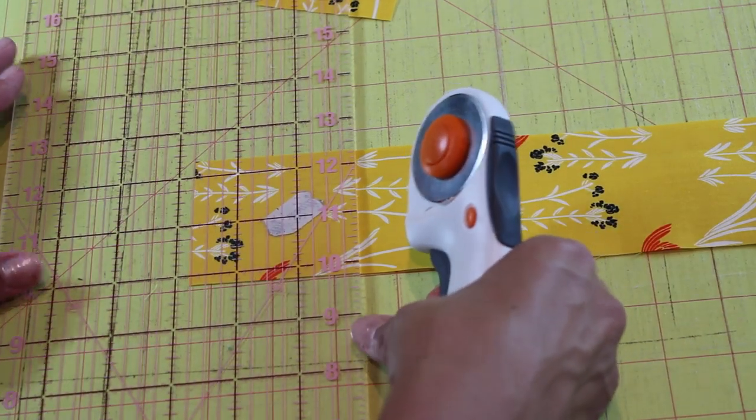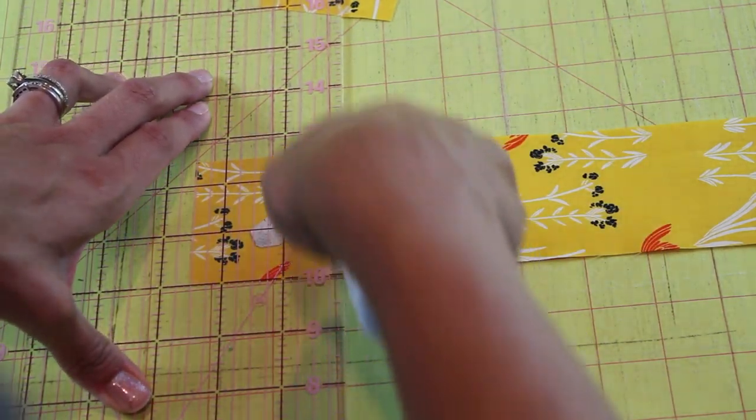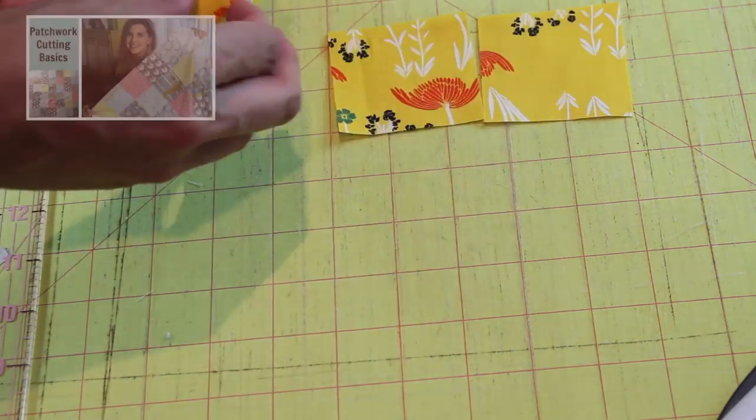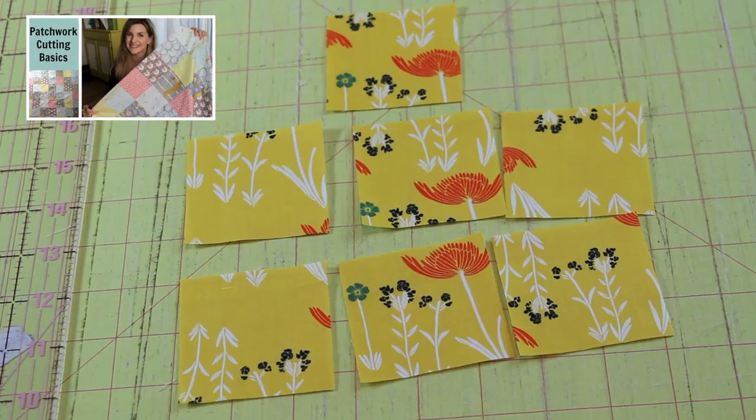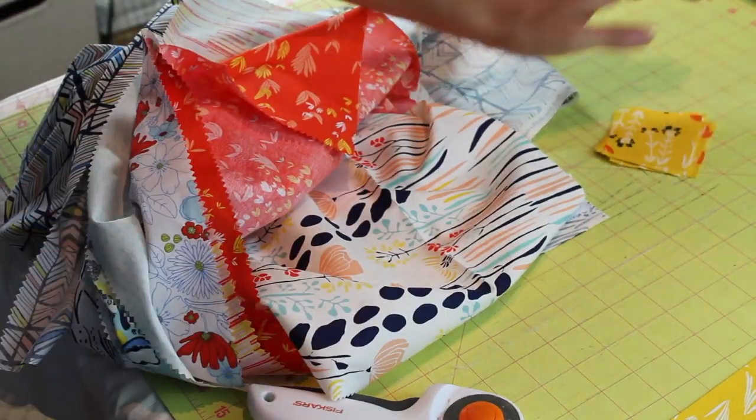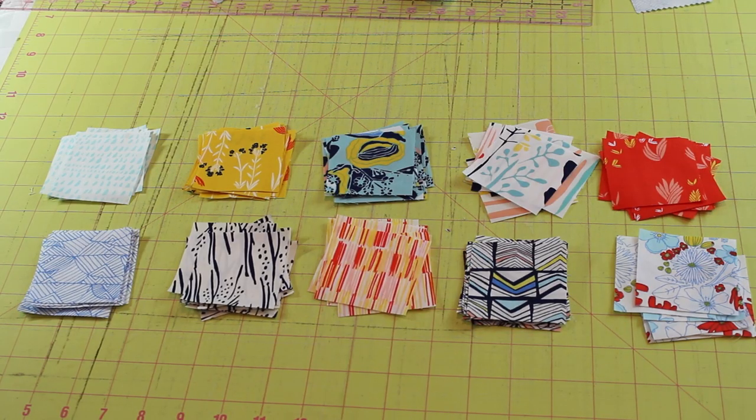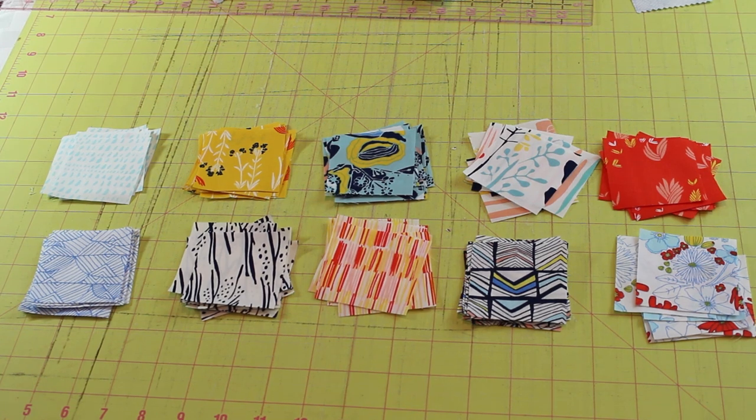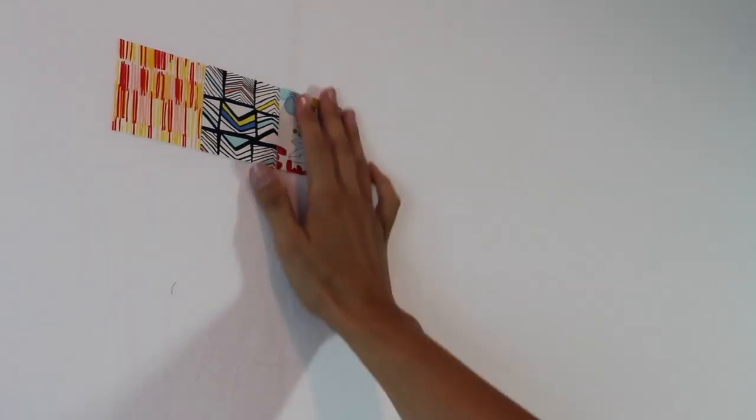If you want a little bit more detailed instructions on patchwork cutting basics, I will link a video right here. So you can check that out. There are my seven pieces. And we're going to cut one strip from all the remaining fabrics in order to get a nice selection of fabrics to choose from.